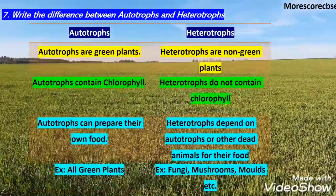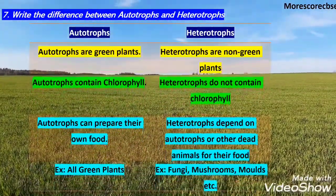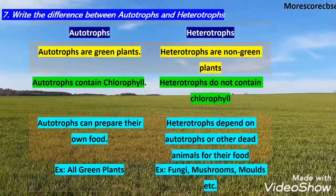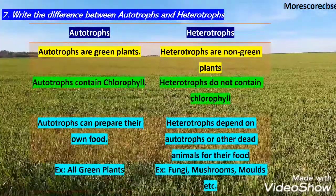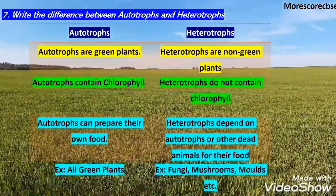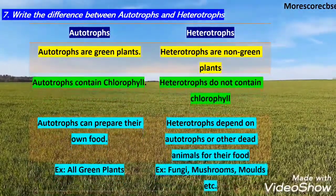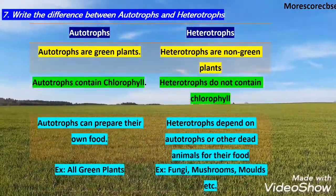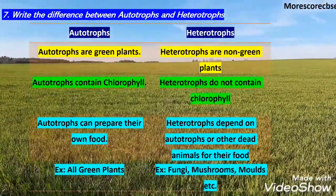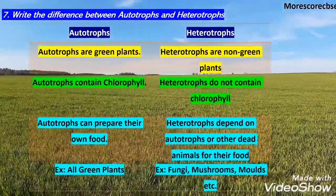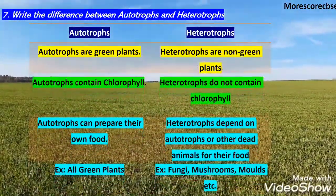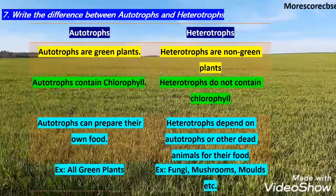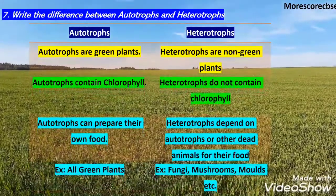This table shows the basic difference between autotrophs and heterotrophs. Autotrophs are green plants; heterotrophs are non-green plants. Autotrophs contain chlorophyll, hence they prepare their own food — examples are all green plants. Heterotrophs do not contain chlorophyll and depend on other plants and animals for their food — examples include fungi, mushroom, and mouse.